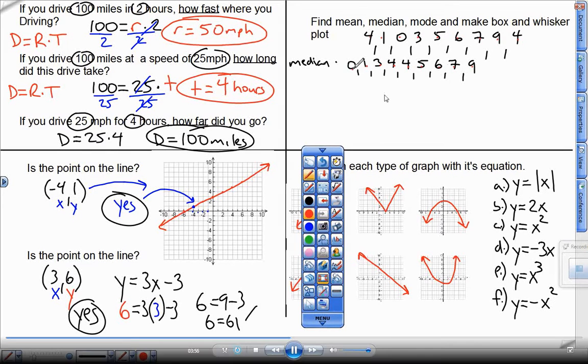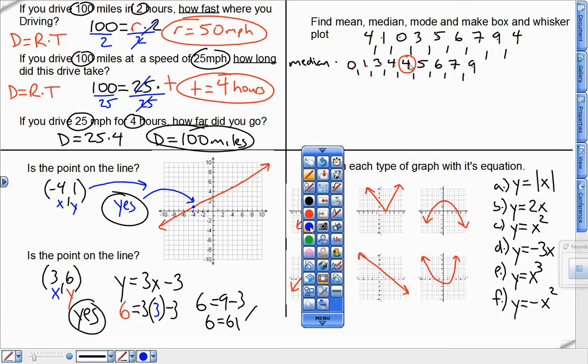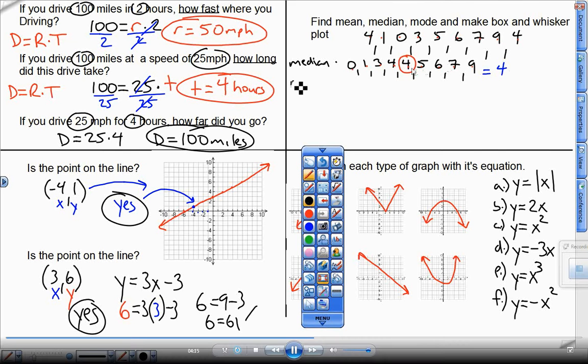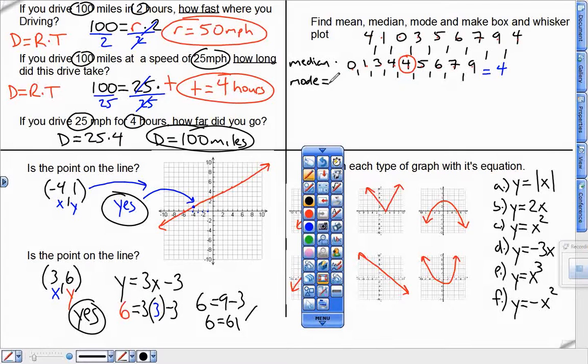Now the median, starting from the outside, counting in, shows me that this 4 is right in the middle. 4 on this side, 4 on the right side. Right in the middle. That is my median. My mode is the number that occurs the most. And in this set, the 4 is the only number that occurs twice. So that is 4.